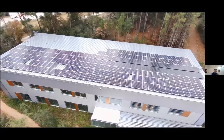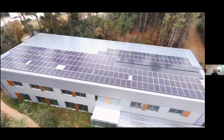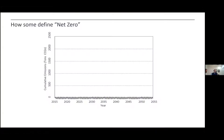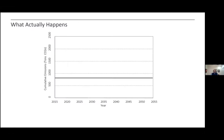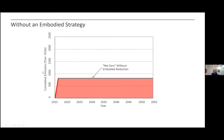They didn't get their ILFI certification right away — it took a couple of years. Looking at the roof, you can see two different types of PV panels: they started with a modest array, then added more when funding became available. A lot of people think net zero means cumulative emissions average out to zero, but that's only true for operational emissions. There's a step function from embodied carbon at building opening that doesn't disappear, and without an embodied carbon reduction strategy, net zero alone doesn't address that.